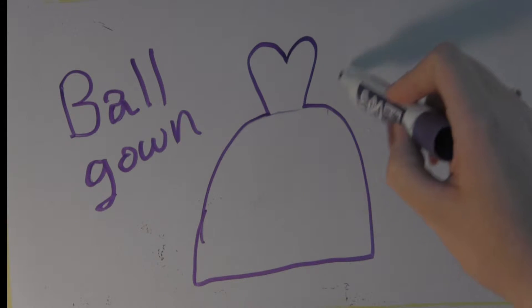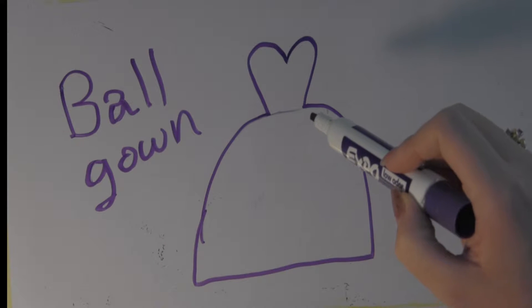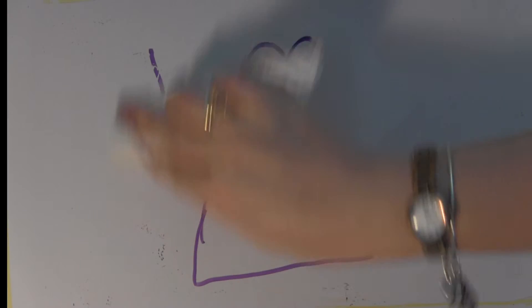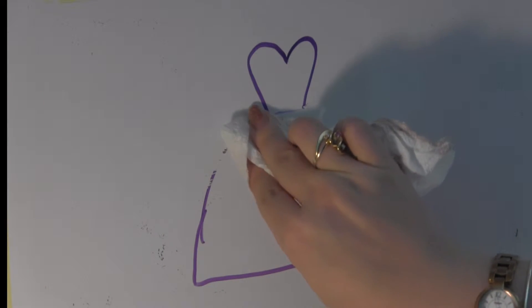The bodice is fitted through the bust and waist, and the skirt will start at the natural waist or a little bit lower. Sometimes petite brides can look a little overwhelmed in this gown, as it can overpower a small frame with so much volume.